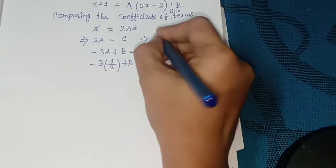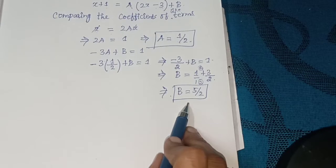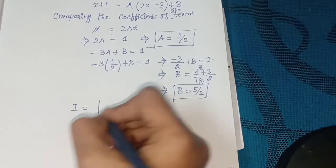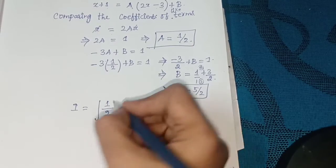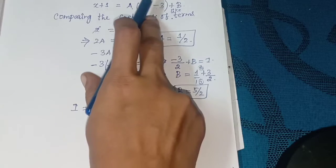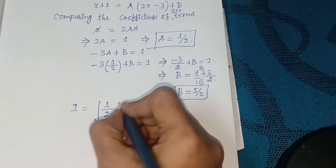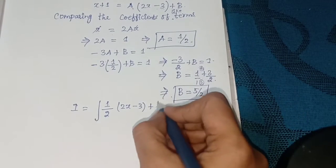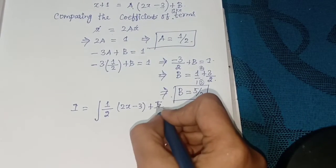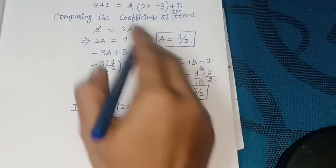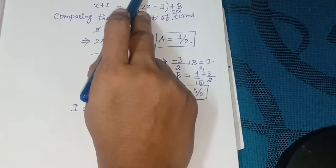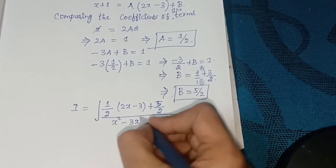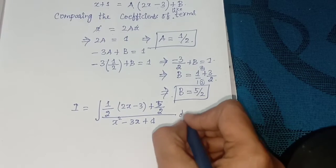So a = 1/2 and b = 5/2. Substituting these values: i = integral of [1/2 into (2x - 3) + 5/2] divided by (x² - 3x + 1) dx.